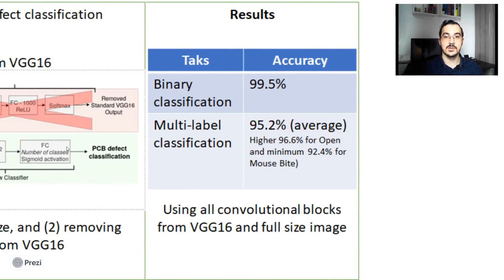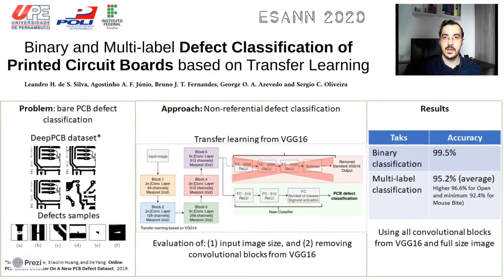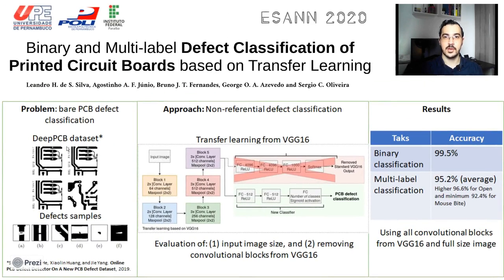As a result, we achieve 99.5% accuracy on binary classification and 95.2% on multilabel classification, which is very close to state-of-the-art PCB defect detection using the referential approach. Thank you for your attention.